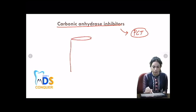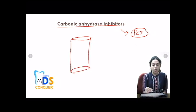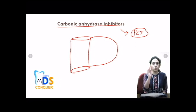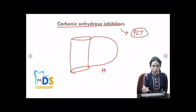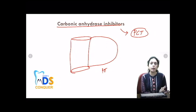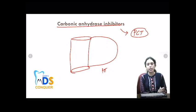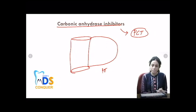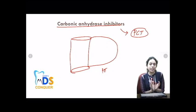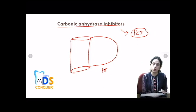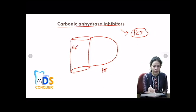So the lumen of the urine and this is the cell or cytoplasm of the PCT. We are discussing the carbonic anhydrase inhibitors which act at the PCT. So what exactly happens in the proximal convoluted tubule? Sodium and...